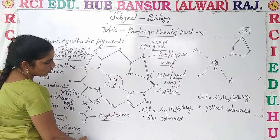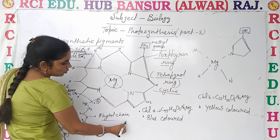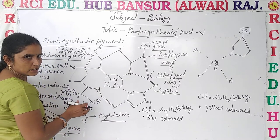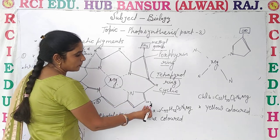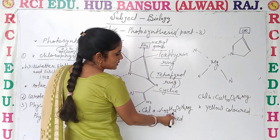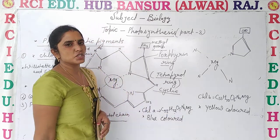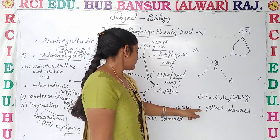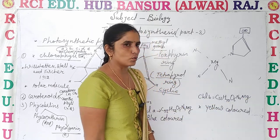You need to write it in this manner: the phytol chain is connected to the fourth pyrrole ring. This is the structure of chlorophyll A. Its formula is C55 H72 O5 N4 Mg. For chlorophyll B, the formula is C55 H70 O6 N4 Mg.